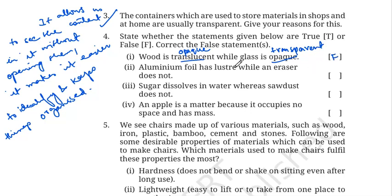Second statement: aluminium foil has lustre while eraser does not. This is true. Aluminium foil shines whereas an eraser does not shine — it does not have lustre.